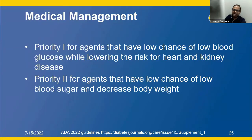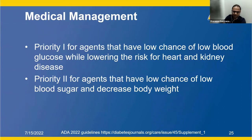Medical management priorities: Priority 1 is for agents that have a low chance of hypoglycemia while lowering the risk of heart and kidney disease. Priority 2 is for agents with a low chance of hypoglycemia that also decrease body weight. The ADA is moving away from focusing on glucose numbers per se, toward actual outcomes — reducing the risk of heart disease, stroke, and premature death, as well as lowering body weight to reduce further medication requirements.